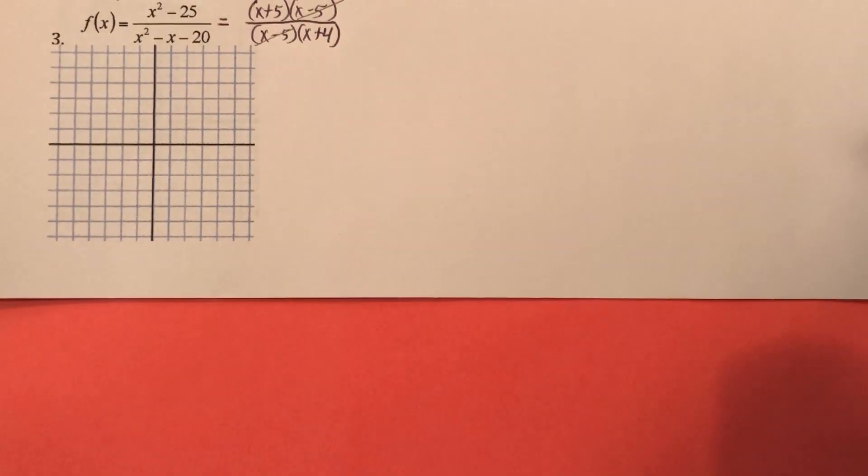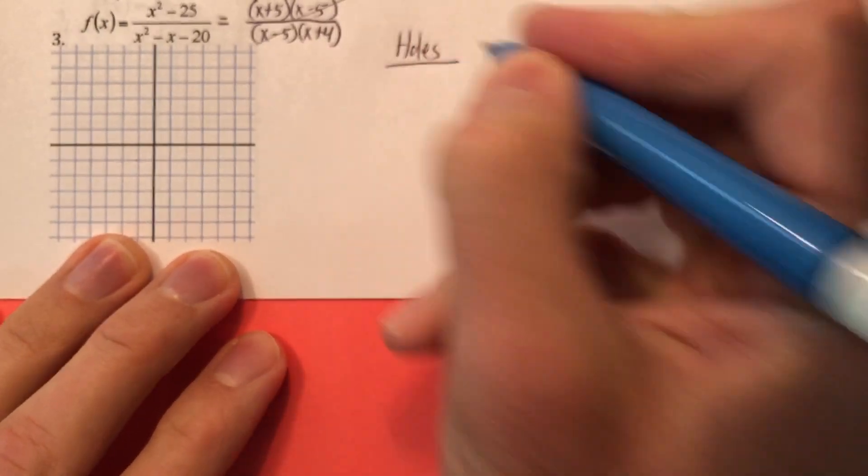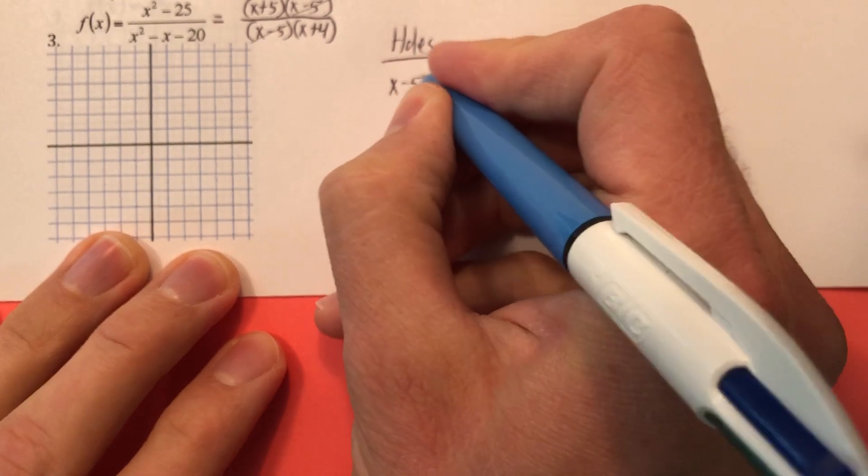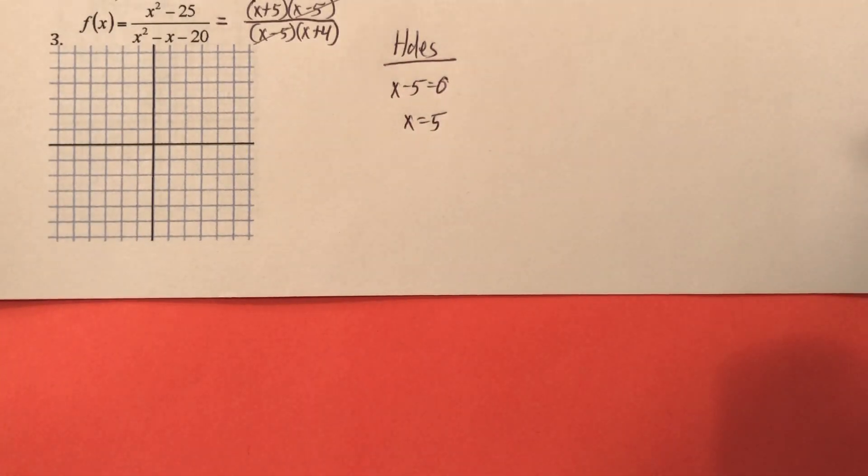So what I'm going to do is say, well, I marked out X minus 5. So let's come over here, and let's find the holes in my graph. And the hole in my graph is where X minus 5 equals 0. So that's at X equals 5. Yay, fantastic. I found the hole in my graph.